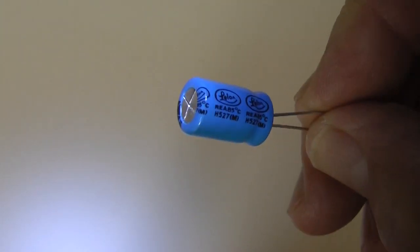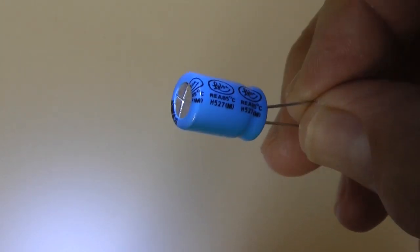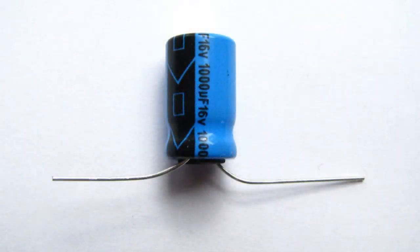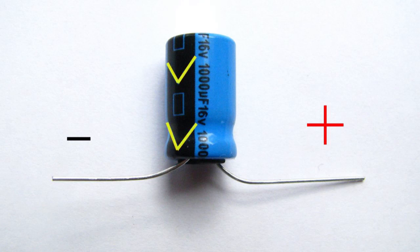I'll demonstrate that function with this electrolytic capacitor. This type of capacitor is polarized. That is, it has positive and negative terminals. Not all capacitors are polarized. The negative terminal is indicated by this arrow on the side of the casing.